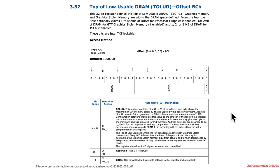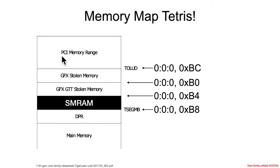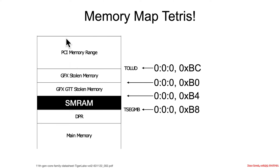The top of lower usable DRAM means that below Toled you have normal main memory, a DMA protected region, some SMRAM, and some stolen memory for graphics. Above Toled is where you start seeing PCIe memory-mapped IO. So above Toled is MMIO space, and below it is special RAM usage effectively.